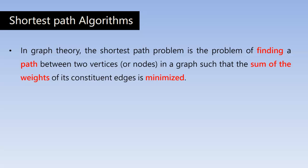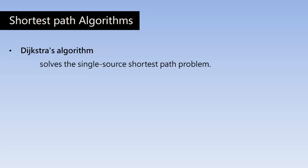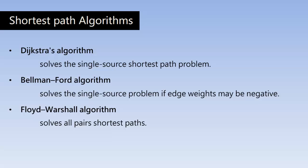To solve the shortest path problem we have many algorithms. In this series we will be learning three important and popular ones. First is Dijkstra's algorithm, which solves the single source shortest path problem — finding the shortest path from a source node to all other nodes. Second is Bellman-Ford algorithm, which solves the single source problem even if edge weights are negative. If weights are positive only, use Dijkstra's; if there are negative weights, use Bellman-Ford. Third is Floyd-Warshall algorithm, which solves all pairs shortest paths — finding the shortest path between every pair of nodes in the graph.